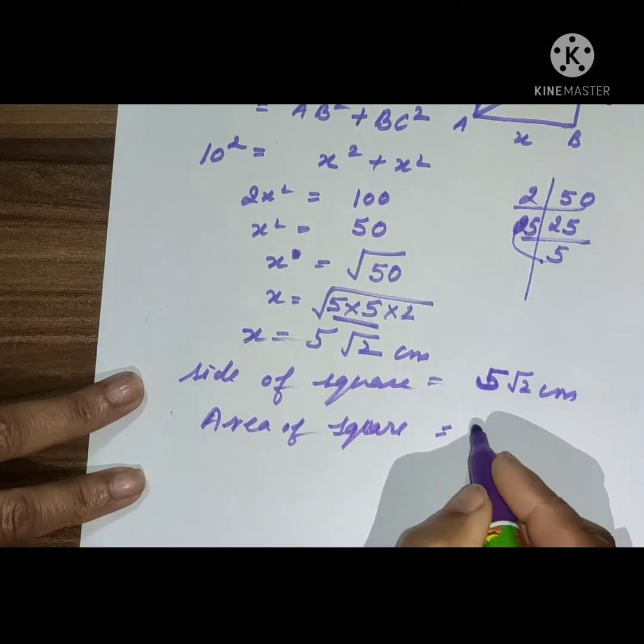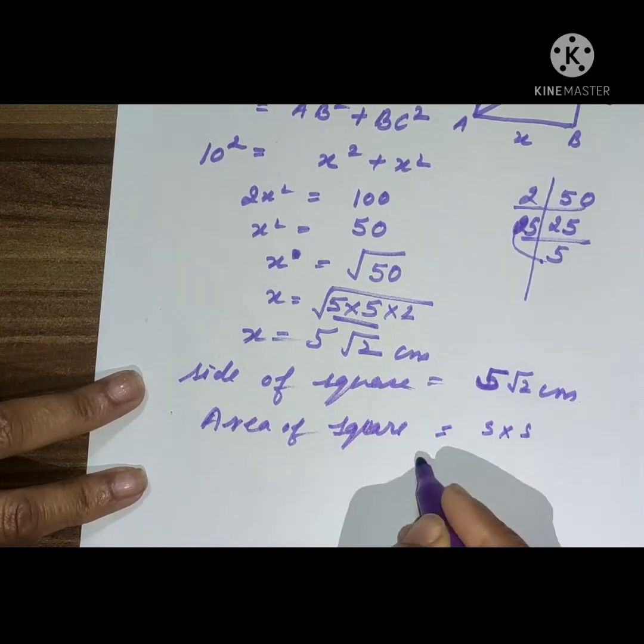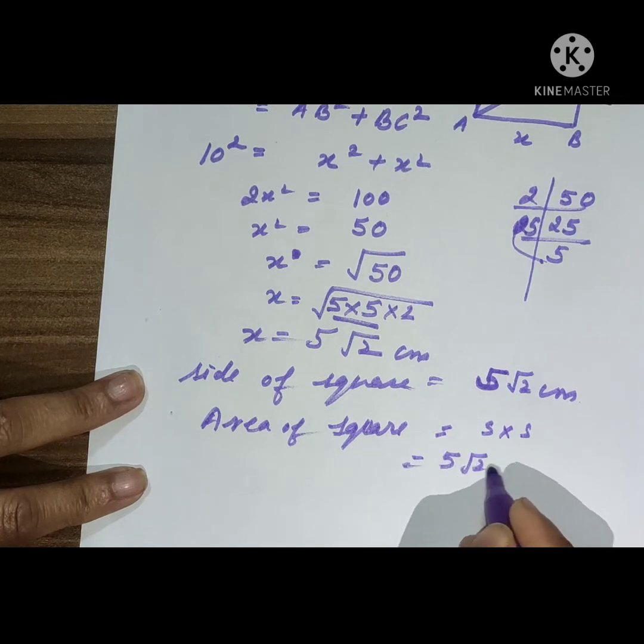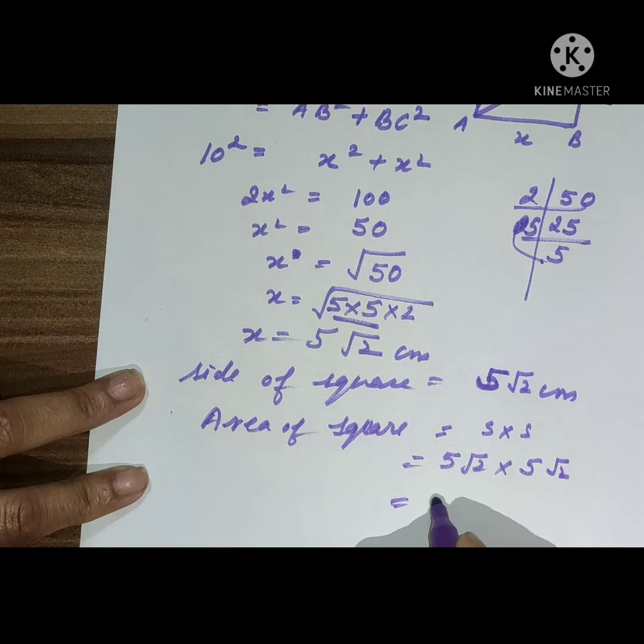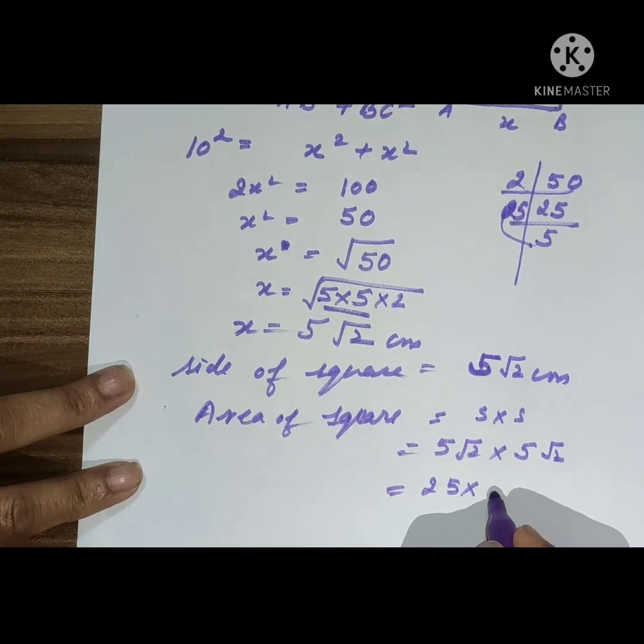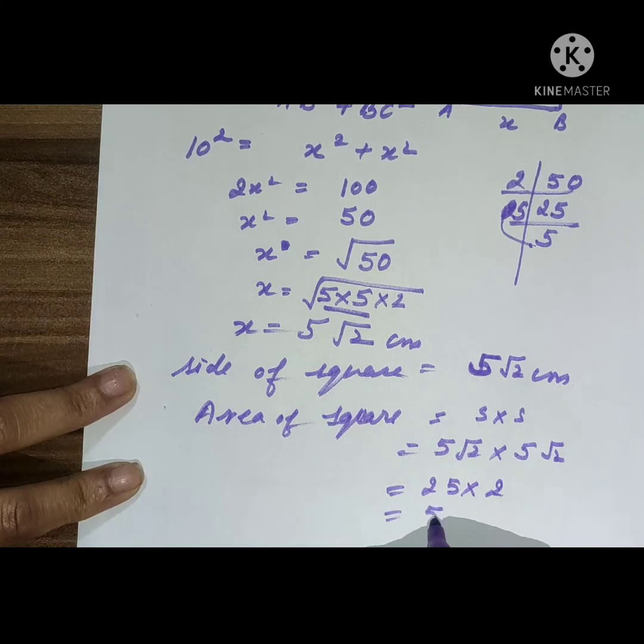Area of square, that is side multiply side, means 5 root 2 multiply 5 root 2. It is equal to 5 times 5, so 25 multiply 2, that is 50 centimeter squared.